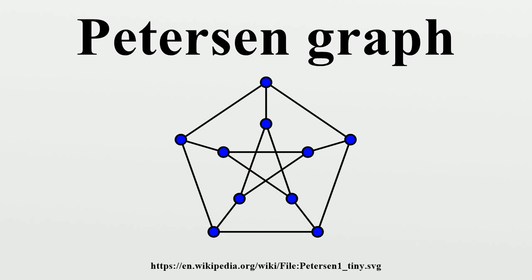The Thue number of the Petersen graph is five. The Petersen graph requires at least three colors in any coloring that breaks all of its symmetries — that is, its distinguishing number is three. Except for the complete graphs, it is the only Kneser graph whose distinguishing number is not two.